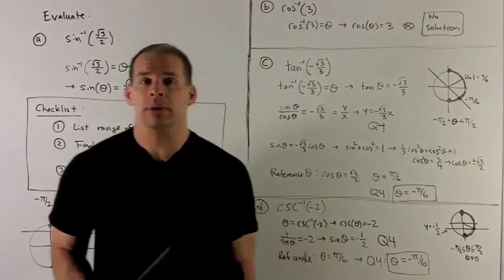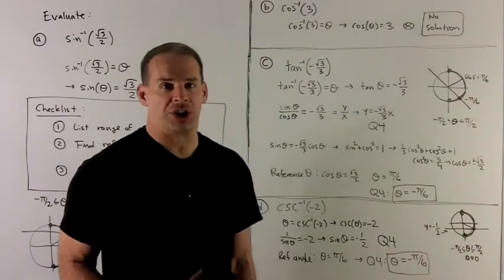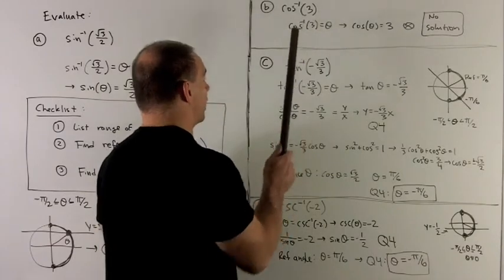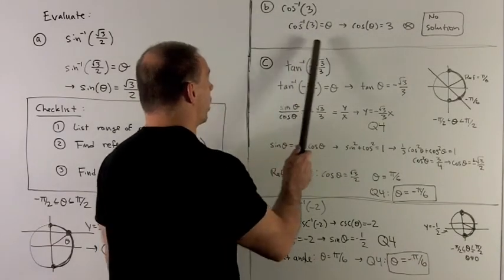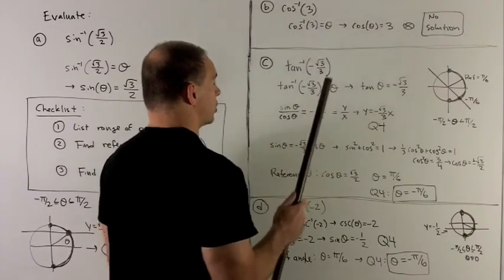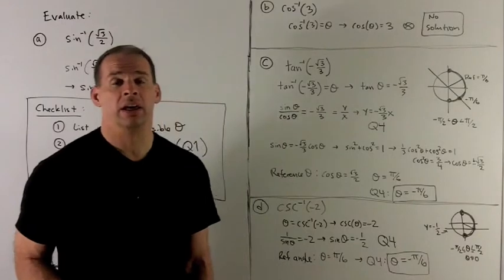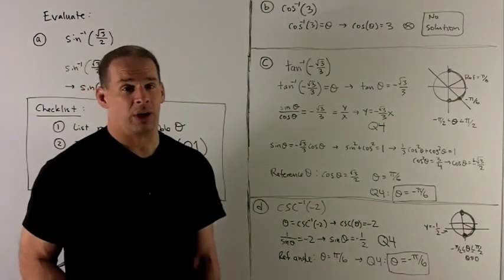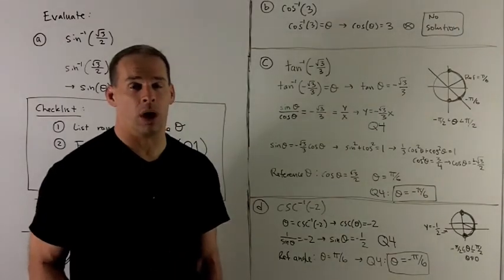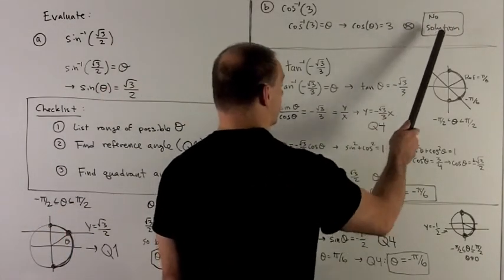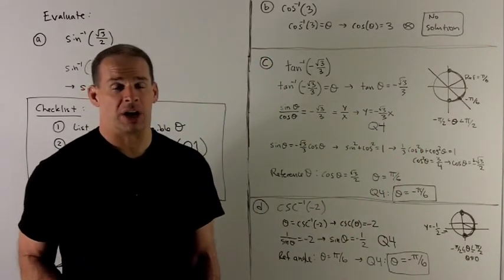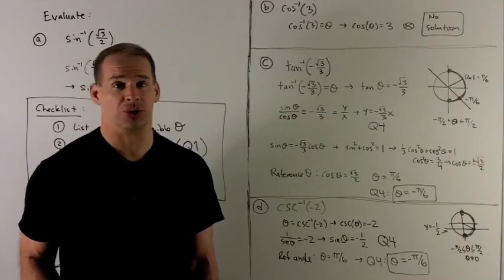Let's try another one — this is just thrown out as a cautionary tale. Let's take inverse cosine of 3. We rewrite it: cosine inverse of 3 equals theta. Move the cosine to the other side, and then I have cosine theta equal to 3. Can a cosine ever be equal to 3? No, it never can — it's always between minus 1 and 1. So my answer here is no solution. Just be aware that not all of these expressions have numerical answers; sometimes there's no solution at all.